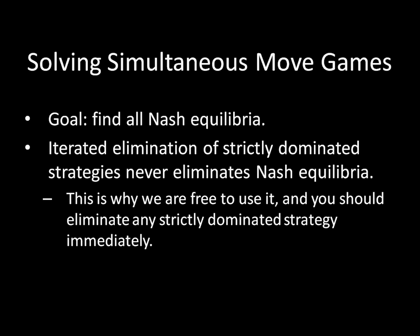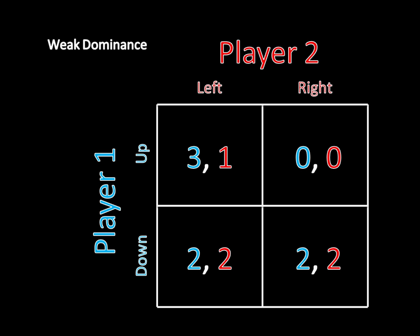But I want to look at something a little bit weaker in this video — in fact, the name of this thing is weak dominance. To illustrate weak dominance, let's look at this game right here. Player one has two moves: up and down. Player two also has two moves: left and right.